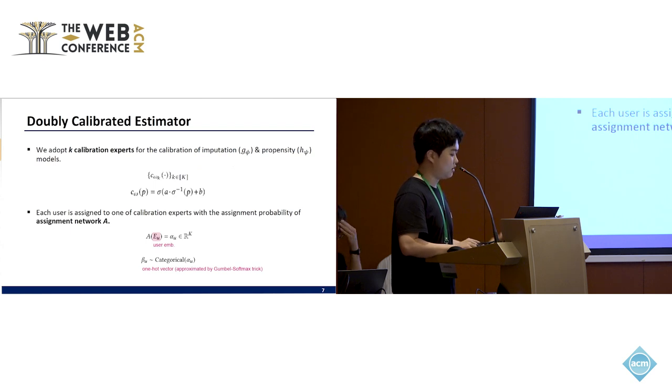Each user is assigned to one of the K calibration experts with the assignment probability of assignment network A. So we input user embedding into the assignment network A, and then we get the assignment probability vector alpha. And from that alpha, we sample one-hot vector beta. The sampling process is approximated by the Gumbel softmax trick, so it is differentiable.